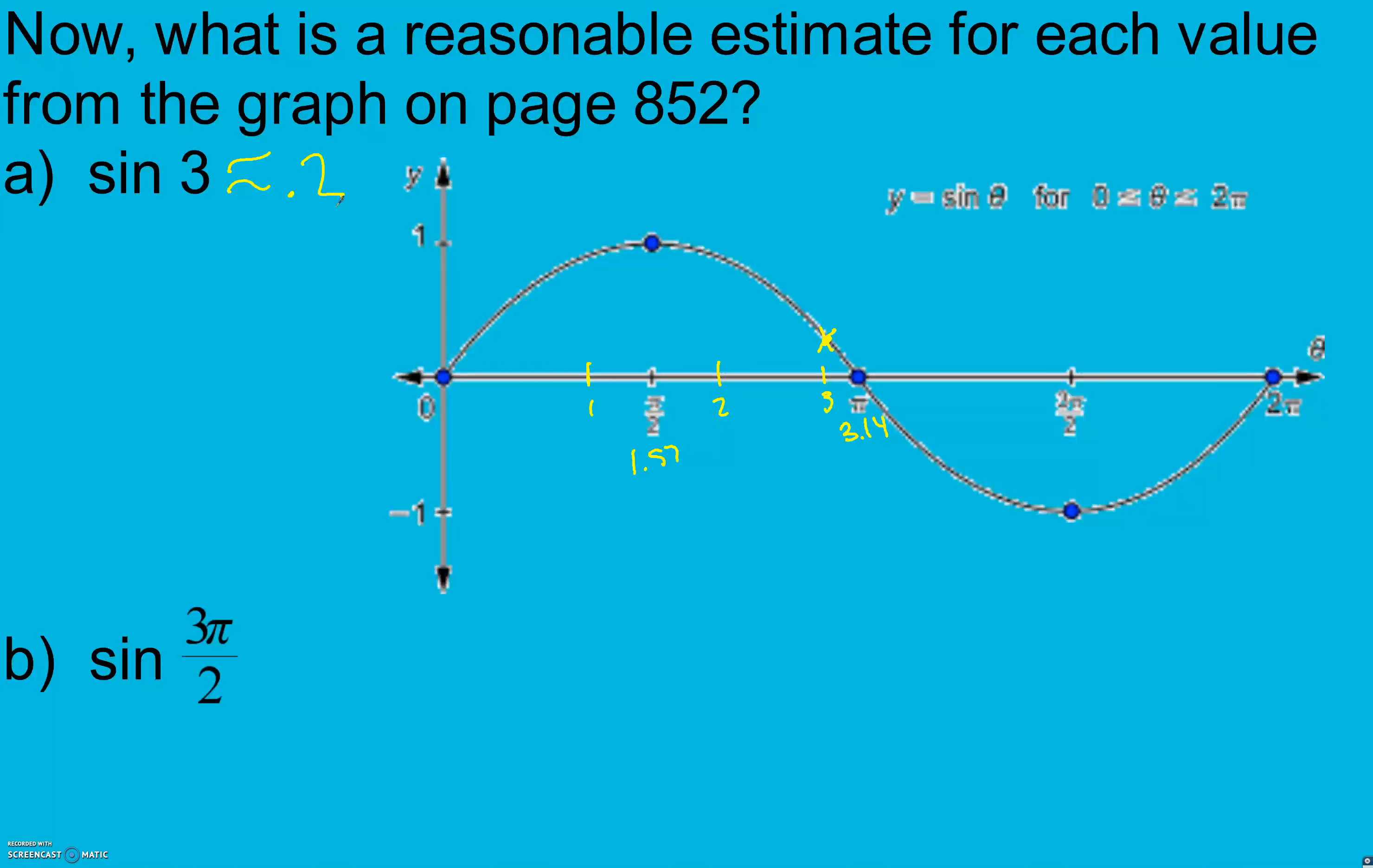Now I'm going to check it in my calculator. Sine 3. Again, make sure you're still in radians. And it's actually approximately 0.141. So I was a little bit off there, but that's okay. I was at least kind of in the ballpark.